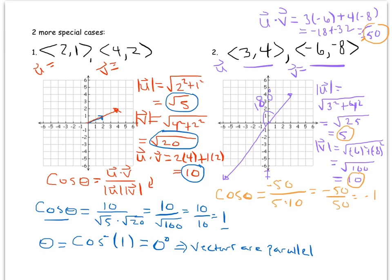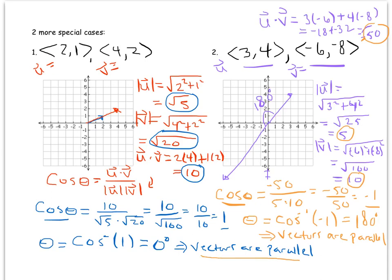That equals -1. So cosine of the angle equals -1, and taking cosine inverse gives us 180 degrees. We also say these vectors are parallel. There are two ways for vectors to be parallel: one is if they're facing the exact same direction — angle of 0 degrees — or if they're facing the exact opposite direction, in which case the angle is 180 degrees.